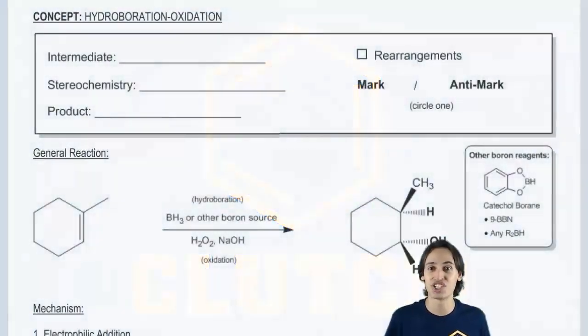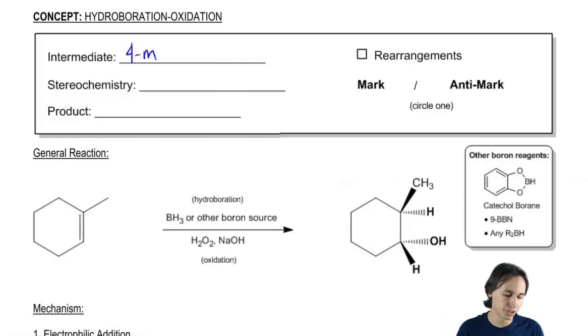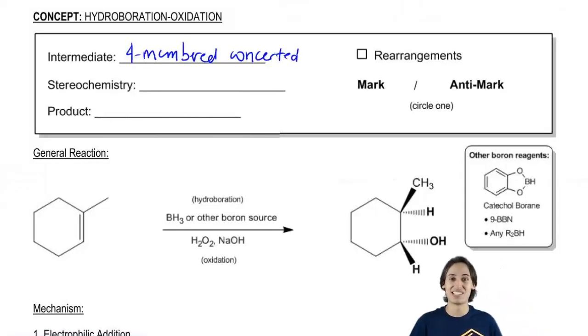The name of this reaction is hydroboration oxidation. So let's go ahead and just learn the general features first. First of all, the intermediate for hydroboration oxidation is not going to be a carbocation. It's actually going to be its own thing. It's going to be what we call a four-membered concerted intermediate. Now I know that already sounds terrible. I'm going to explain to you guys how to draw it, but it is kind of weird. It's a very unique looking intermediate.